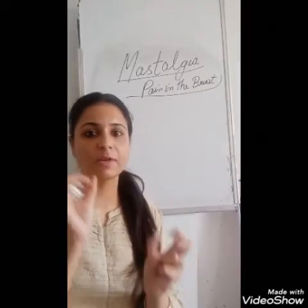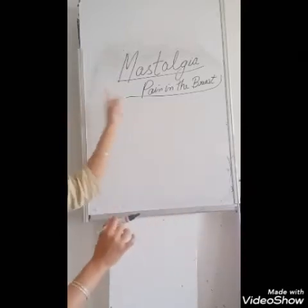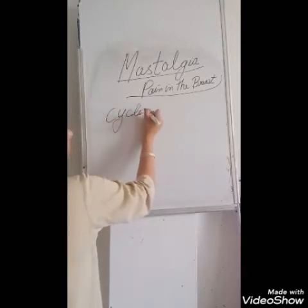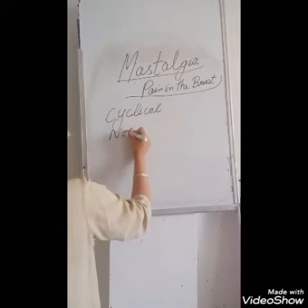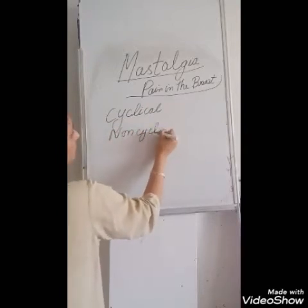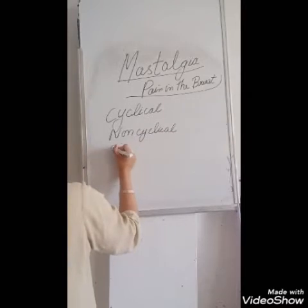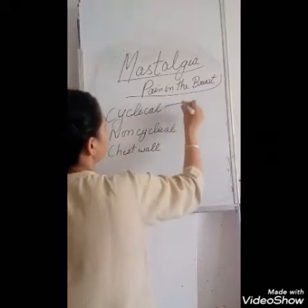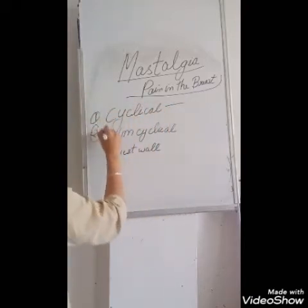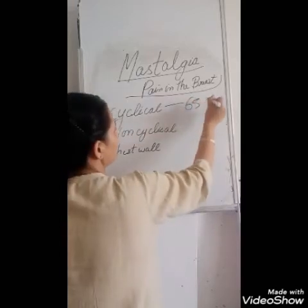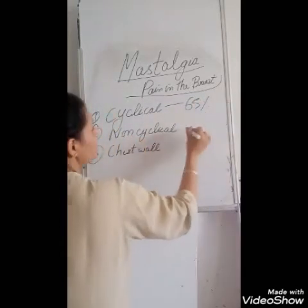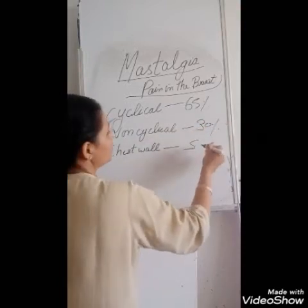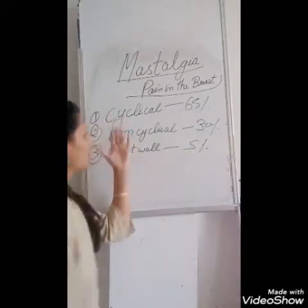Mastalgia could be cyclical, non-cyclical, and related to chest wall. Cyclical mastalgia accounts for 65% of reported cases, non-cyclical for 30%, and 5% is related to chest wall mastalgia.